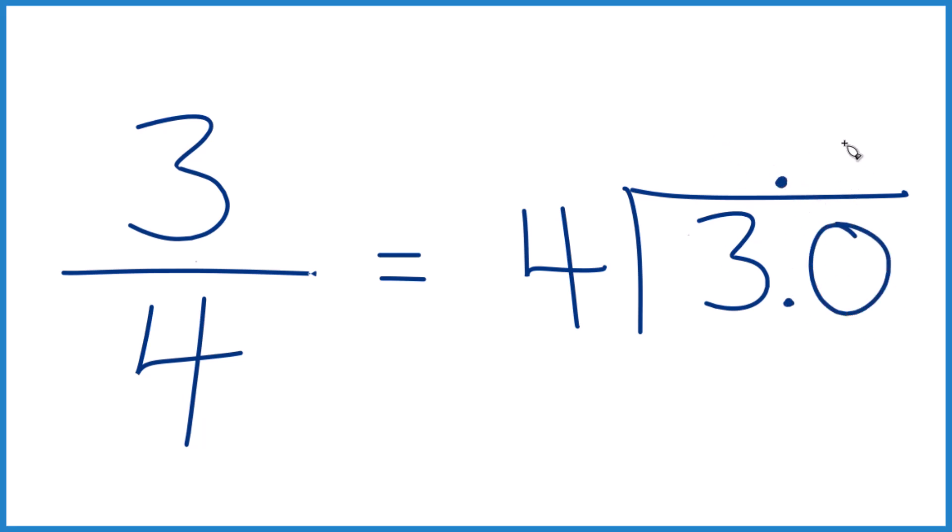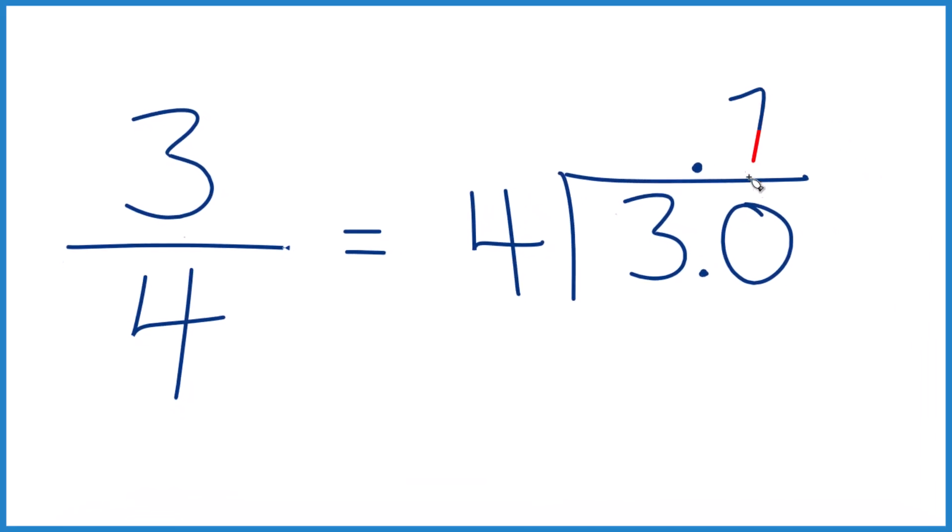And now we can think about how many times 4 goes into 30. So 7 times 4, that's 28, we subtract, we get 2.